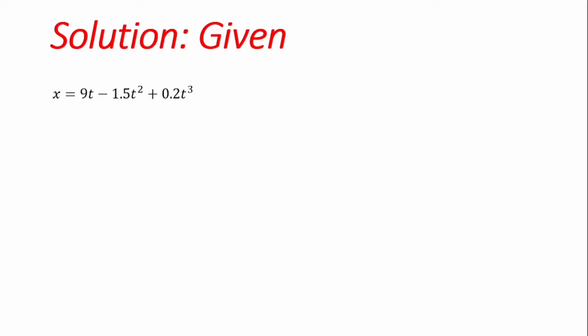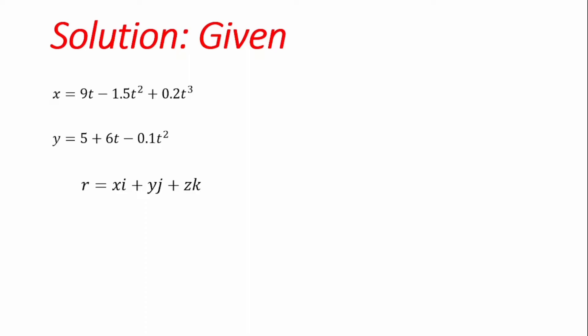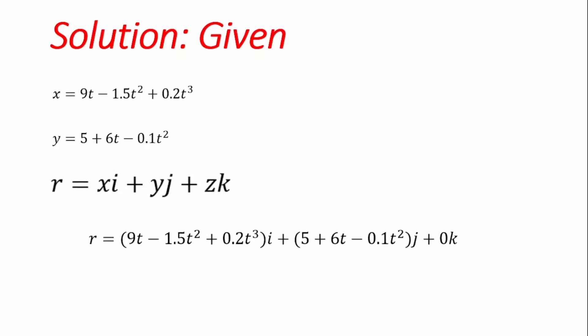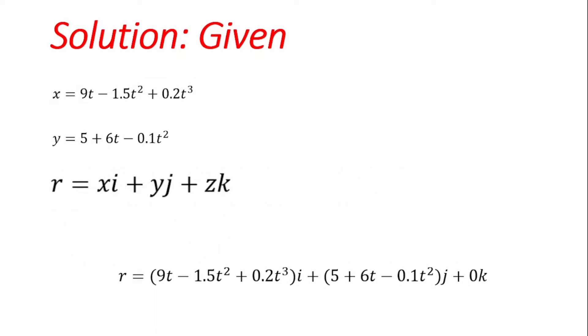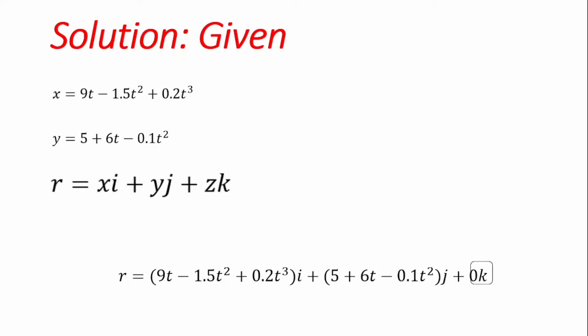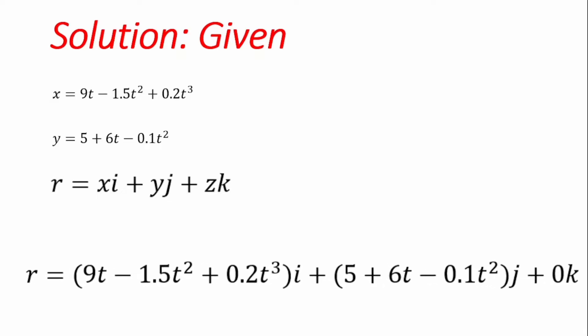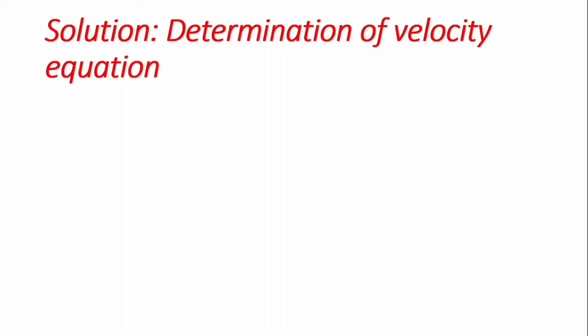We're going to start by identifying what was given. We have an equation for the x-coordinate and an equation for the y-coordinate, each as a function of time. The position vector r at every point in time combines the x, y, and z coordinates. So to find r, we input our values of x, y, and z (which is zero for this case) into the equation to get our basic equation for r.